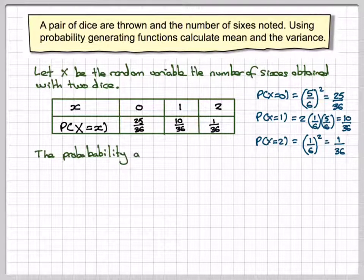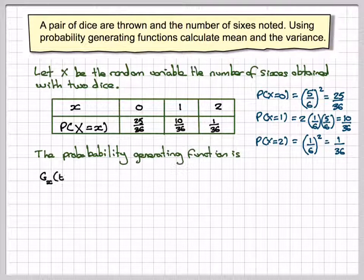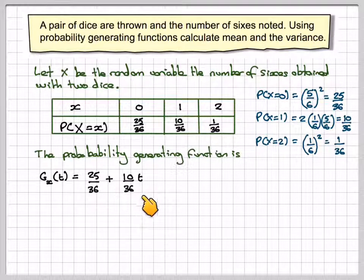So the probability generating function is going to be, for this, G_X(t), which is 25 over 36, plus 10 over 36t, plus 1 over 36t squared.